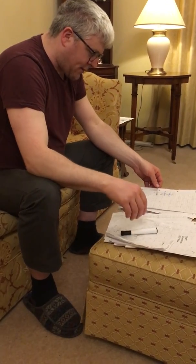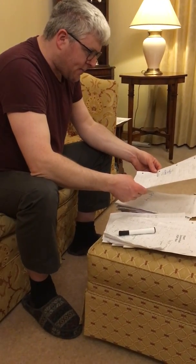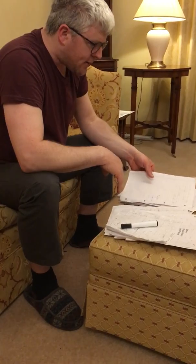Glycolysis occurs in the cytoplasm and requires no oxygen. Now the pyruvate enters the mitochondria, and it's broken down into—